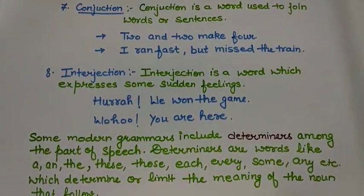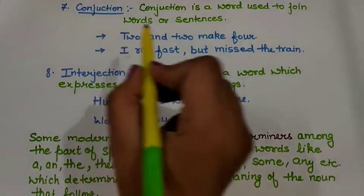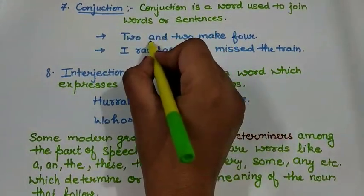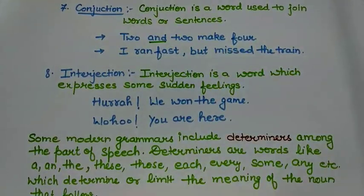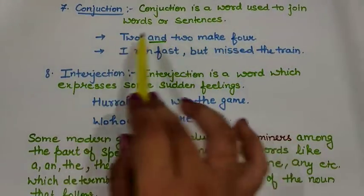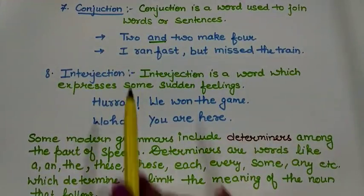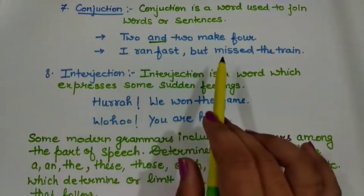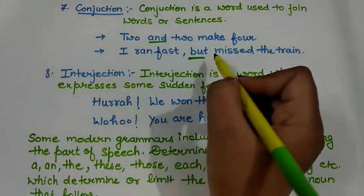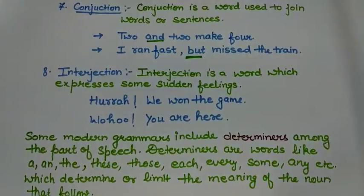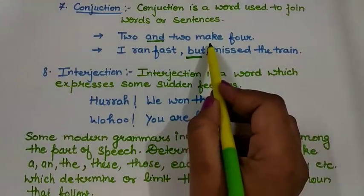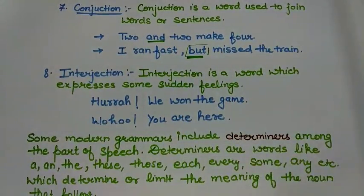The next part of speech is conjunction. A conjunction is a word used to join words or sentences. For example, 'Two and two make four' — 'and' is used as a conjunction connecting the two parts. 'I ran fast but missed the train' — 'but' connects the two sentences 'I ran fast' and 'missed the train,' acting as a connector. So conjunctions are words used to join words or sentences.